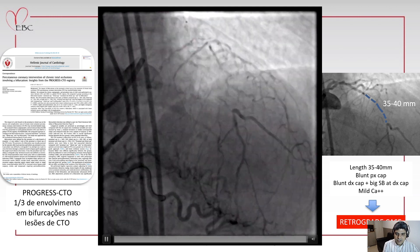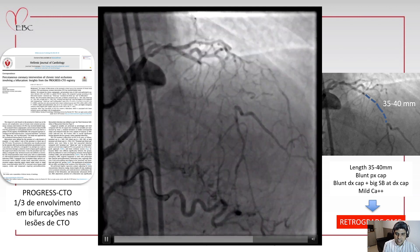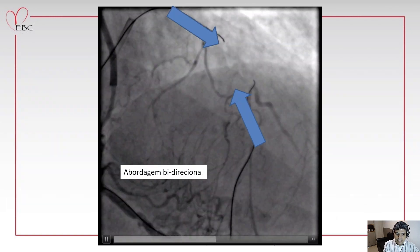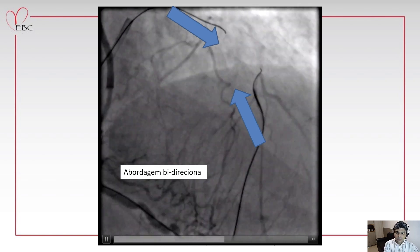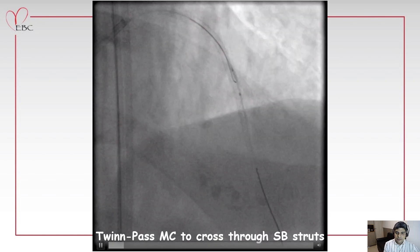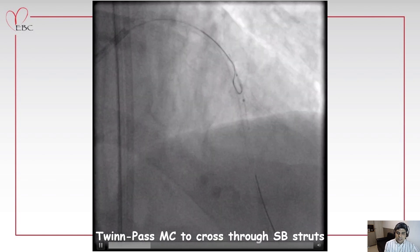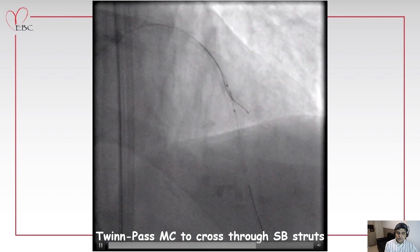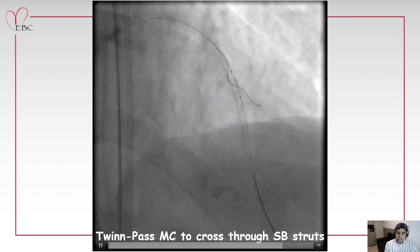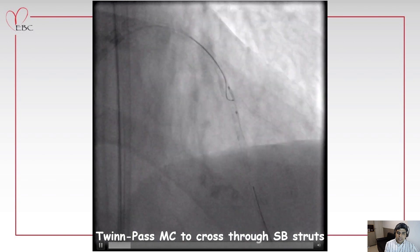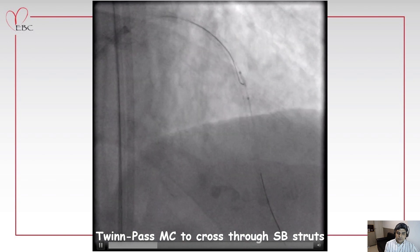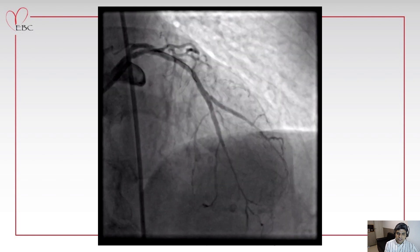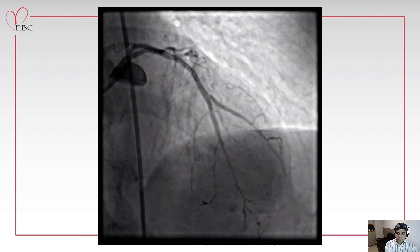An example of a more complex case — a CTO case with a distal cap involving a bifurcation. After a retrograde and base-to-base directional approach for recanalization, we had to deal with a bifurcation and performed a mini-crush. We had a very difficult time wiring through the side branch struts, and we used the Twin Pass double-lumen catheter with a Whisper wire to access through the struts of the side branch and achieve a good result.